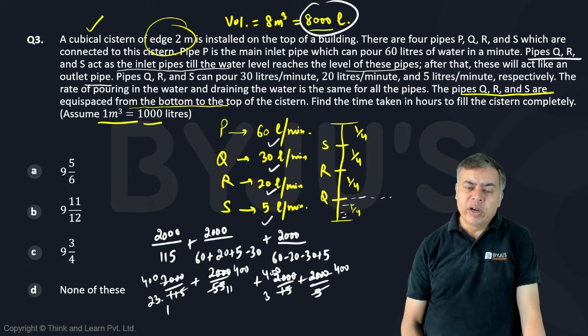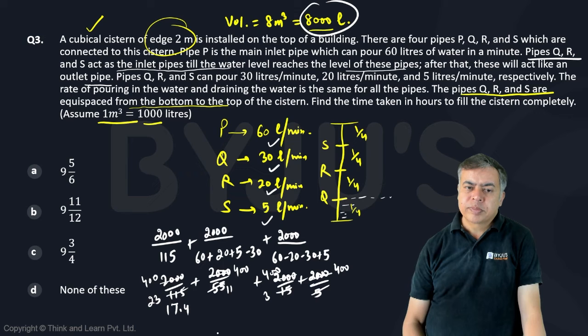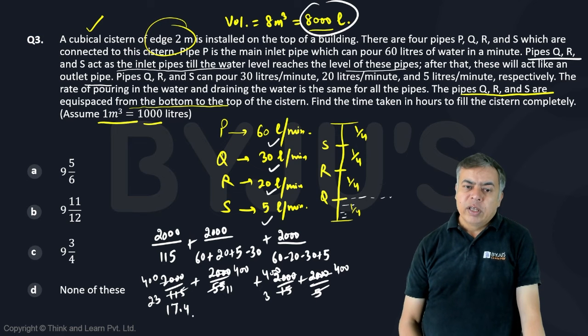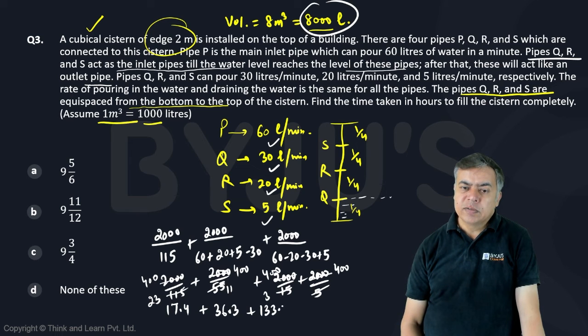So this will become 400 by 23, which is 23 into 123, 170, 23 into 7, 161, 9, 0. Approximate 4. 9, 0. So 23 into 492. Yes. Approximate 4. Here it will be 11 into 3, 33, 7, 0, 6, 4, 0. So 3 something. 400 by 3 is 133.33. And this is 400.